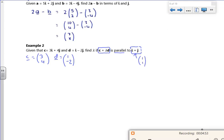So what's C plus lambda d? (3, 4) plus lambda times by (1, -2). So C plus lambda d would be (3 plus lambda, 4 minus 2 lambda).